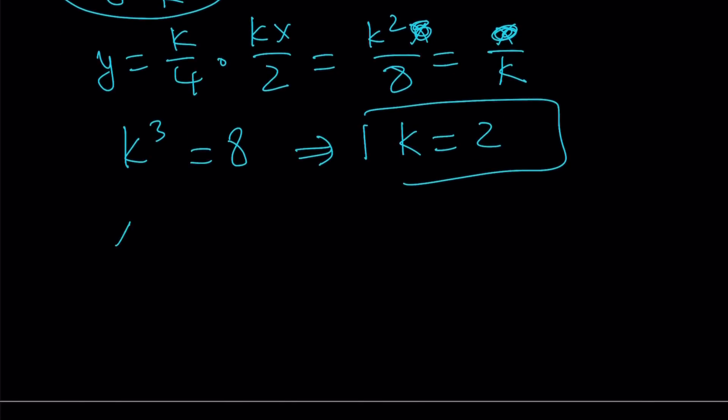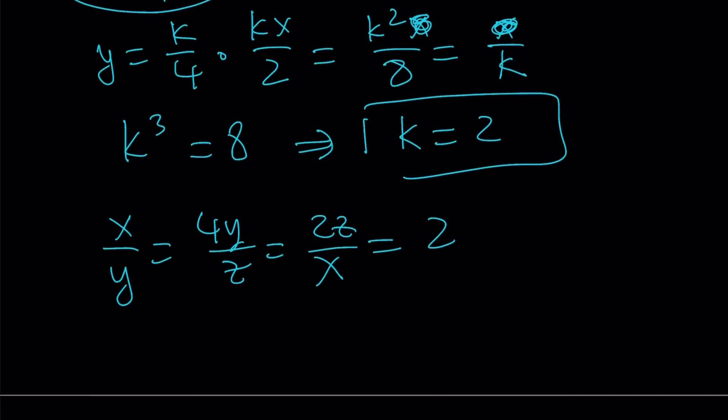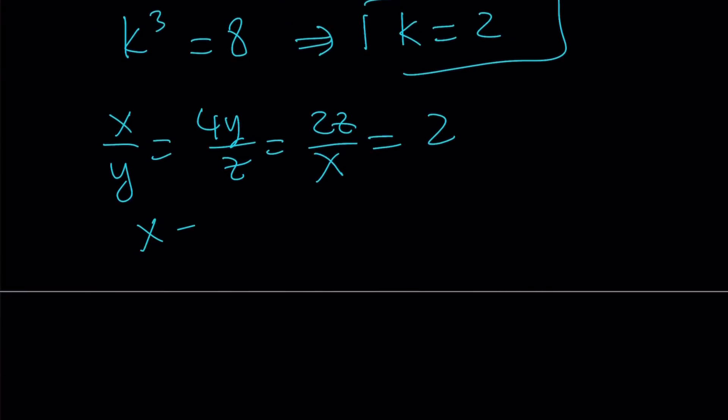Therefore, to sum it up, we can safely say x over y equals 4y over z equals 2z over x. And when they're all equal to 2, from here we get x equals 2y, and z equals 2y, and of course y equals y.